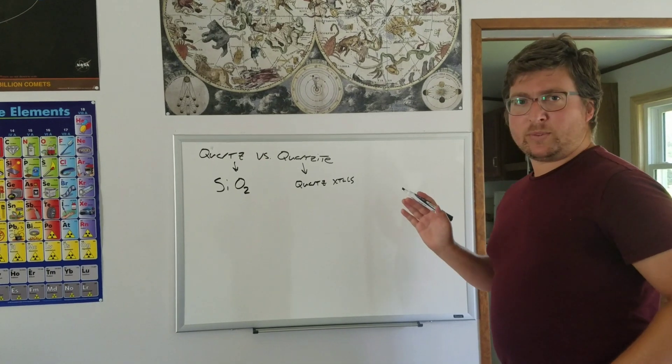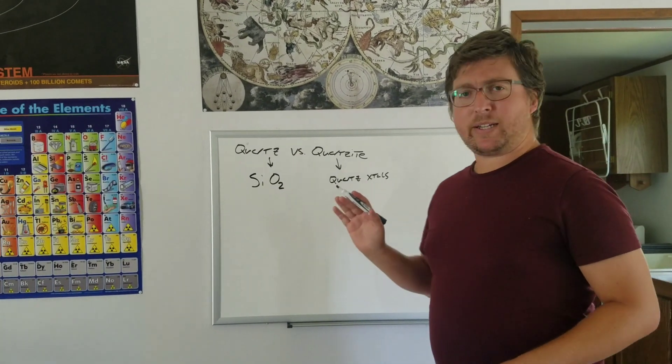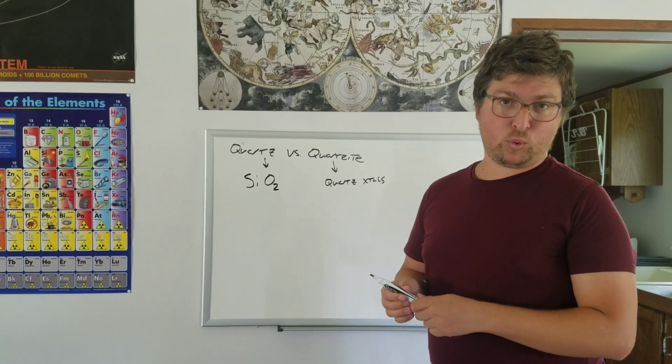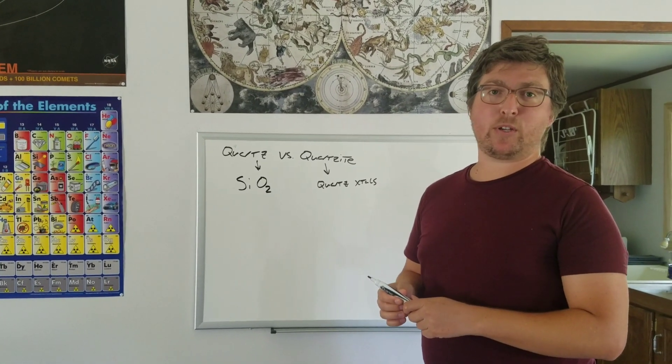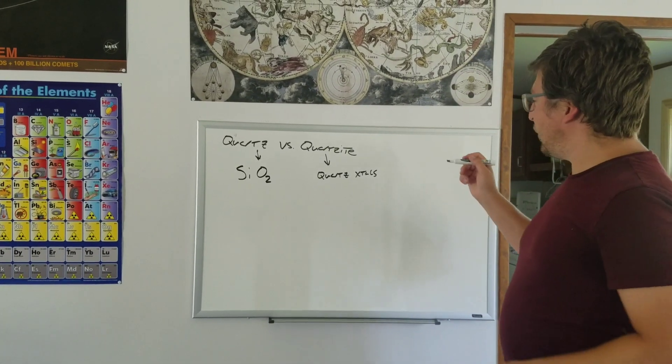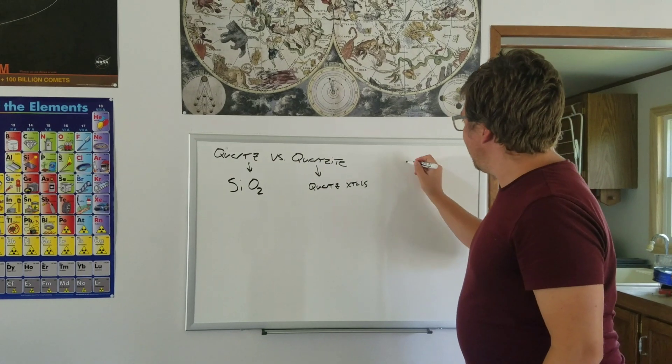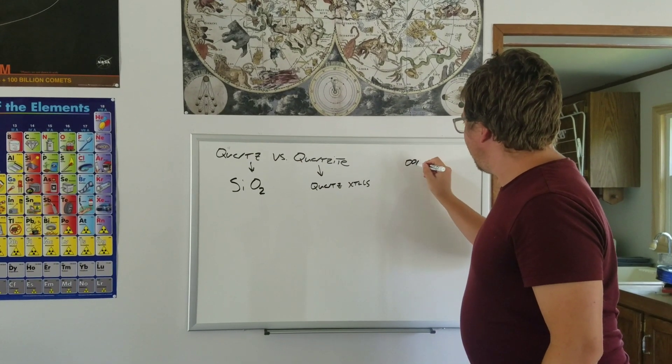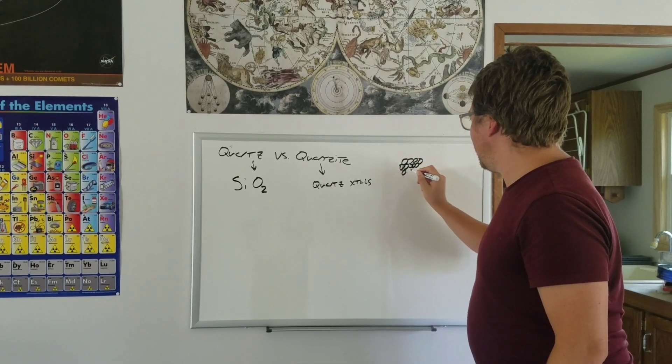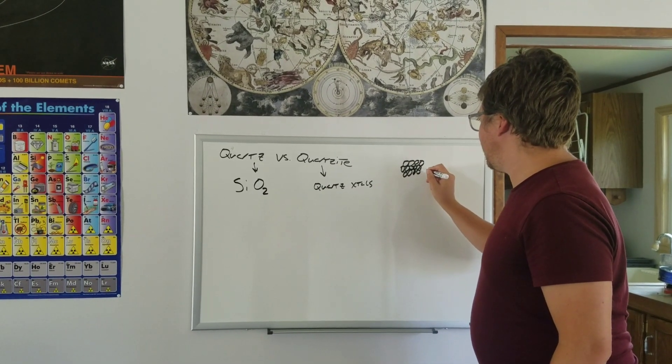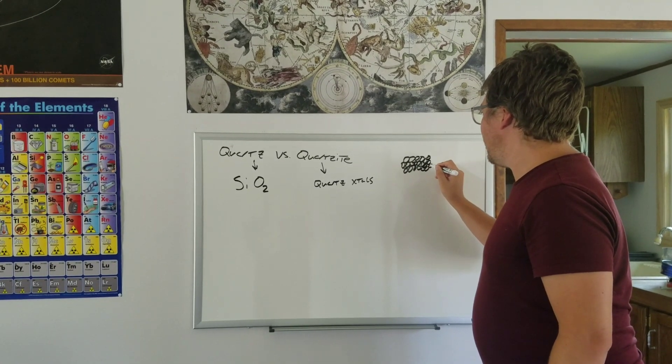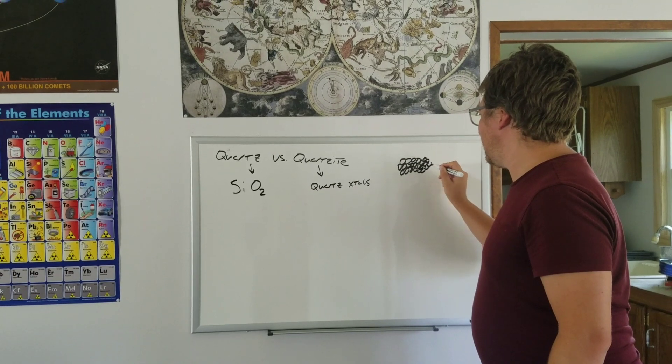The way quartzite forms is that's a metamorphic rock. It actually starts off as a sandstone. Sandstones are mostly made out of quartz grains. Quartz sand is by far the most common. And what happens is you get a sandstone. We're going to zoom way in on this and it's got tons of sand grains all over it, just made entirely out of sand grains that are just cemented together with usually more quartz, sometimes it's calcite.